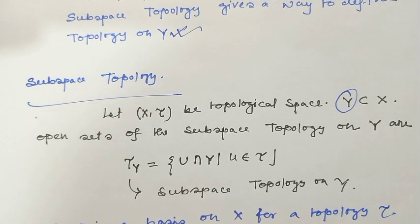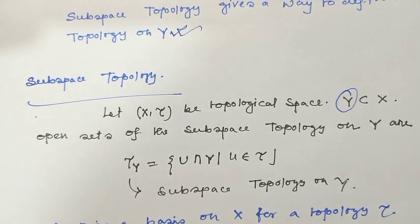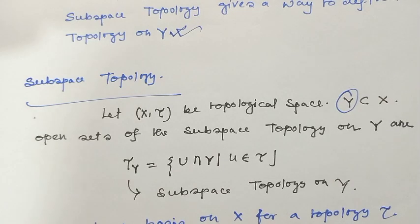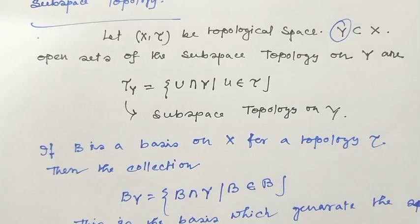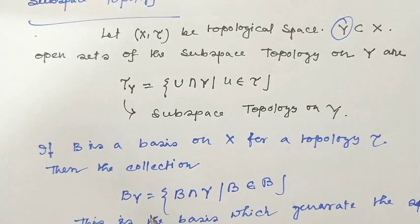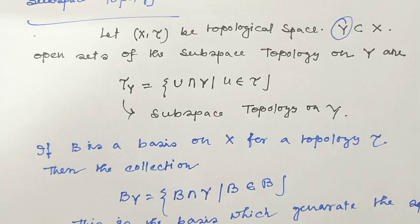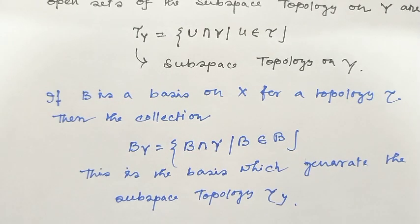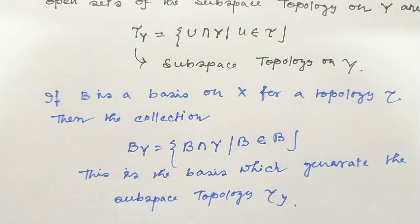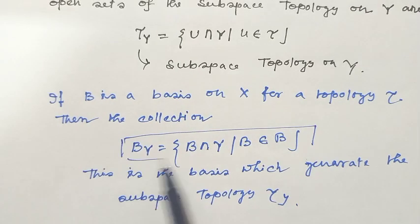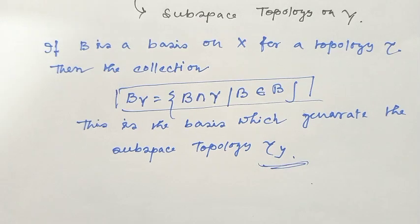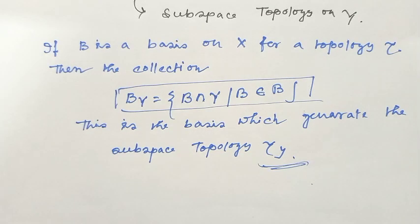This τ_Y is the subspace topology on space Y, where Y is a subset of topological space X. Now I will see what is the basis of the subspace topology which generates τ_Y. If B is a basis on space X for topology τ, then the collection B_Y consisting of elements B ∩ Y is the basis for the subspace topology, which generates the subspace topology τ_Y.